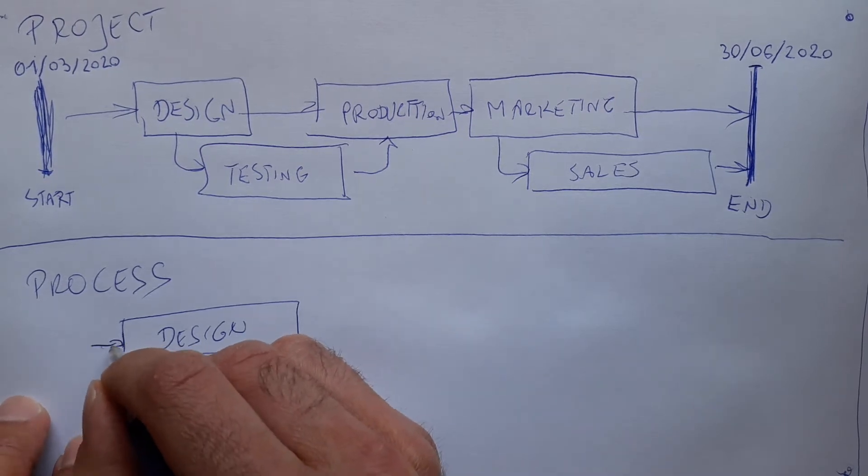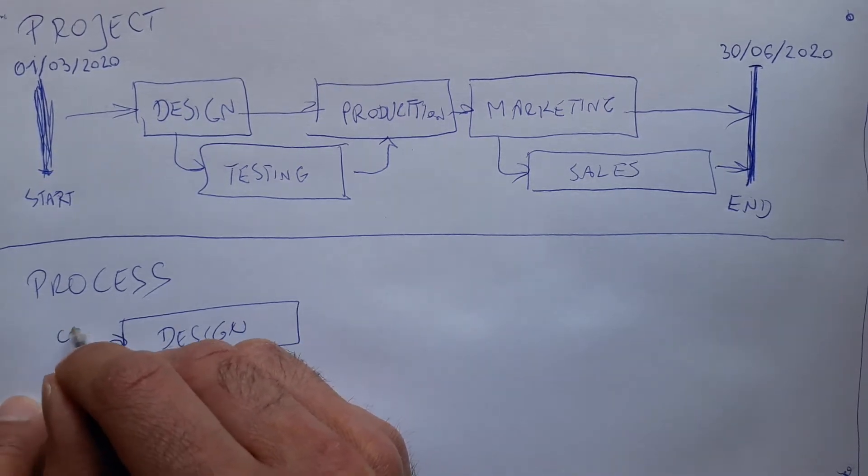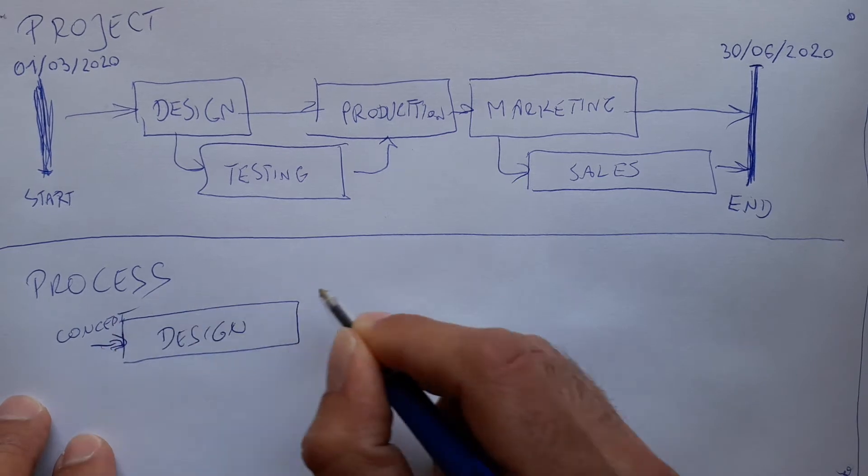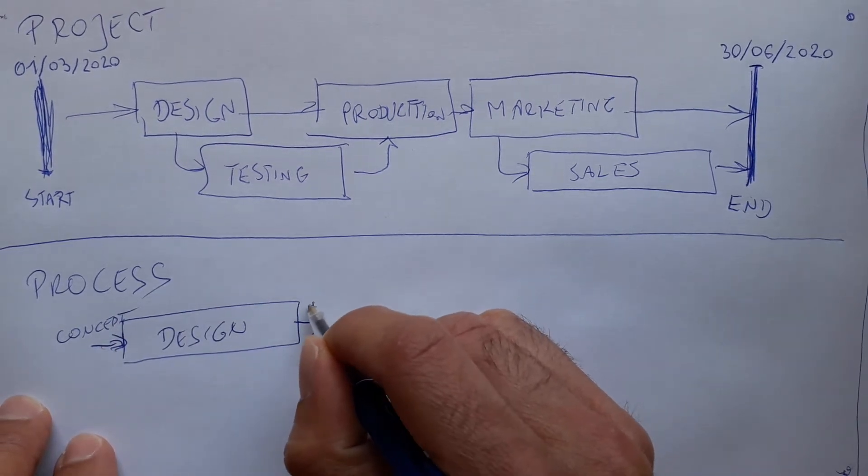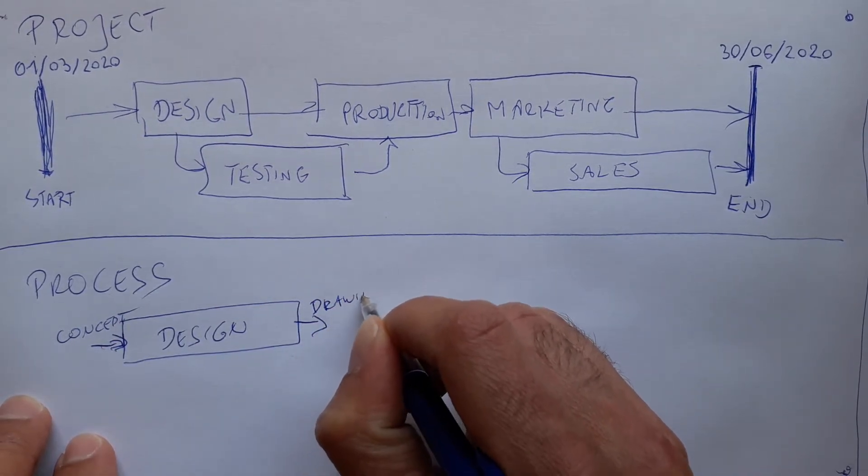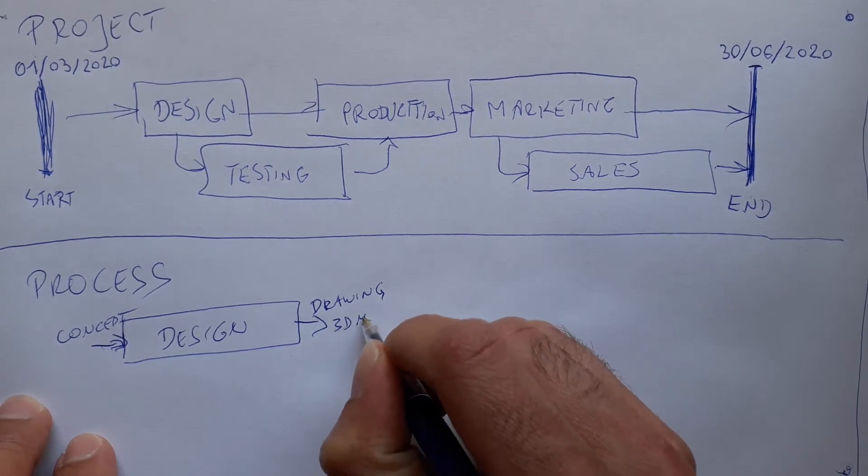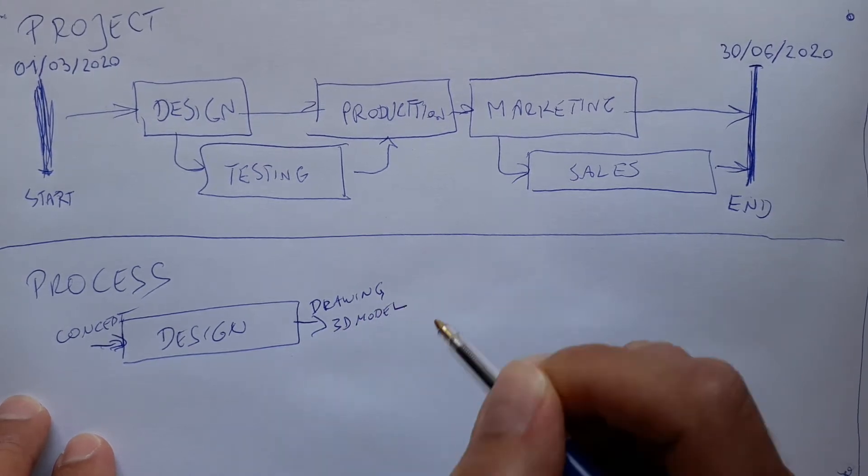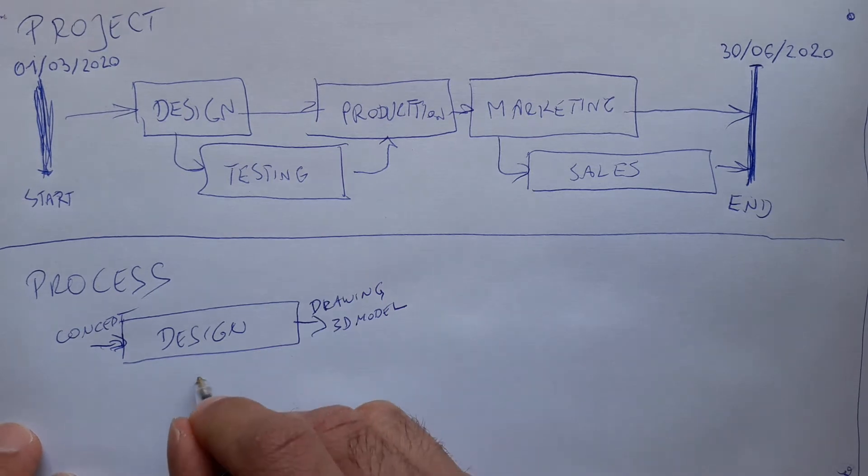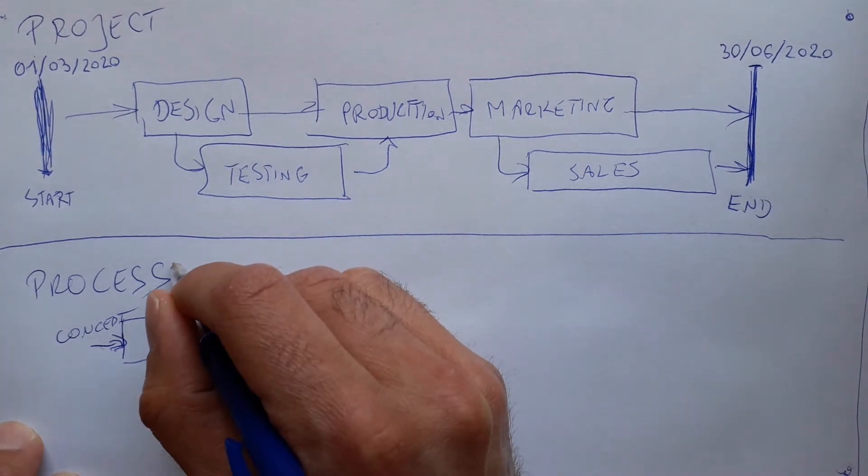So we can have a design process, and actually it has an input, for example of a concept, and it has an output which will be for example a drawing or a 3D model.